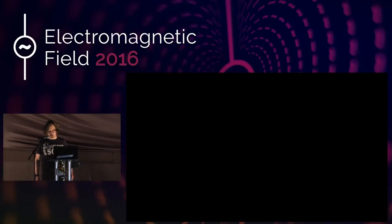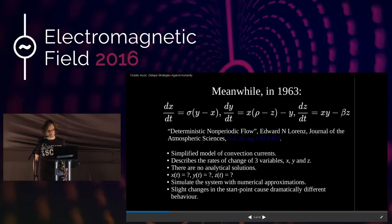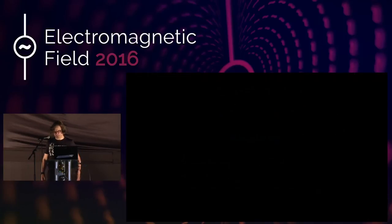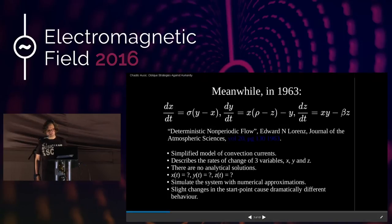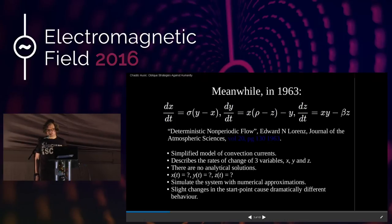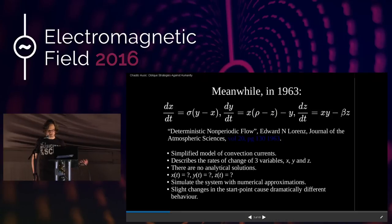You can only simulate the system with numerical approximations, and it's the apple-on-Newton's-head moment of dynamical systems. Lorenz is playing with the system, he pauses it, he restarts it, he types in his three starting coordinates again — slightly truncating a couple of decimal places — and he observes that the system behaves completely differently to the way it was before. So we have very sensitive dependence on initial conditions.